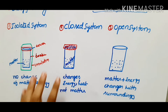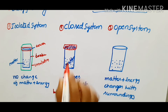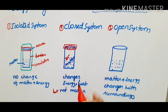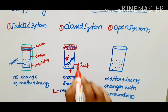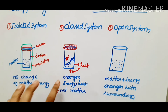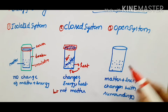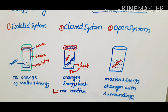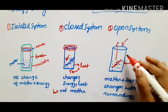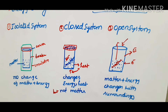What is a closed system? In a closed system, there are changes in heat or energy, but not in matter. Next, what is an open system? Consider a beaker that is not closed but open. In an open system, both matter and energy changes happen with surroundings. These are the different types of systems.